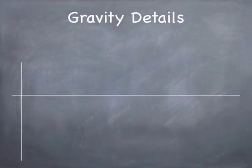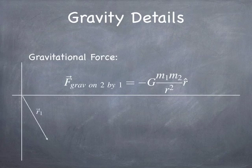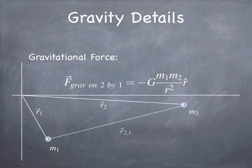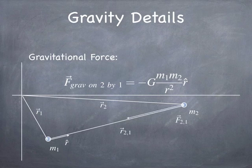Now let's talk about the gravitational force in more detail. Say we have particle M1 at position R1 and particle M2 at position R2. To compute the force on mass 2, we first calculate the position of mass 2 relative to mass 1 — that's simply R2 minus R1. We get a unit vector R-hat pointing in that direction. Then the force is computed by plugging in the masses, putting the magnitude of the R21 vector squared in the denominator, multiplying by R-hat, and applying the universal constant negative G.